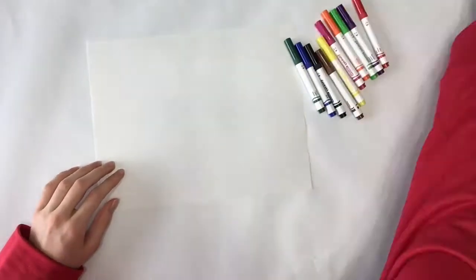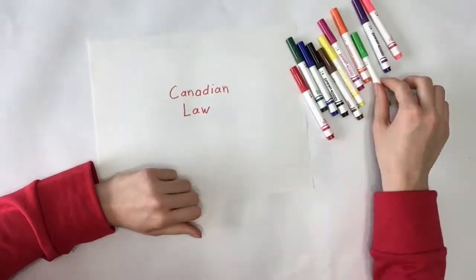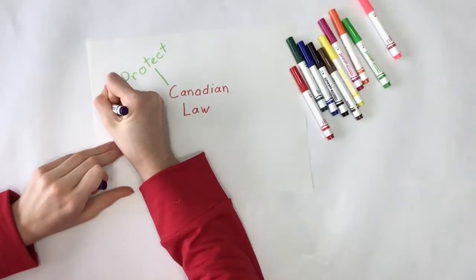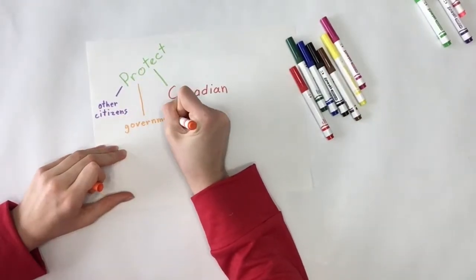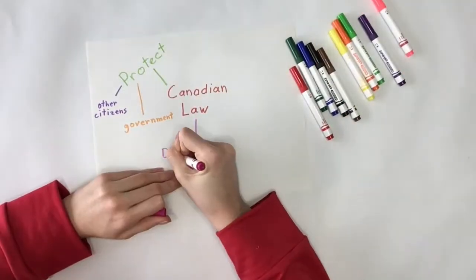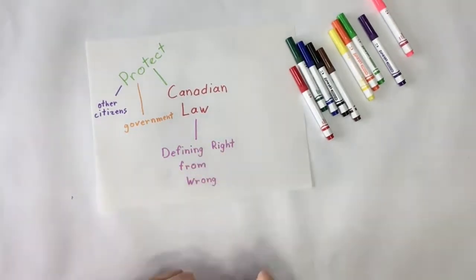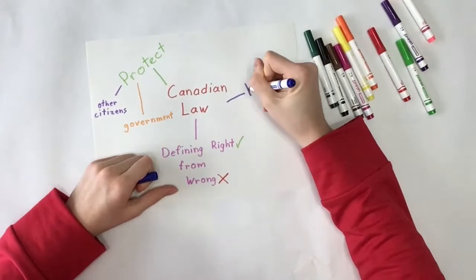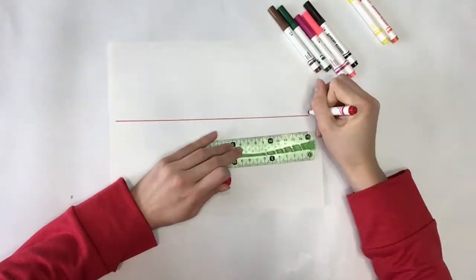In order to explain how Canadian law works, we need to understand why we need laws in our country. A country's laws protect citizens from each other and even their own government. Defining right from wrong may be obvious and simple in some instances, but not so much upon closer inspection. To ensure that every citizen can live in peace, a country needs good laws. Laws have been around for a long, long time.